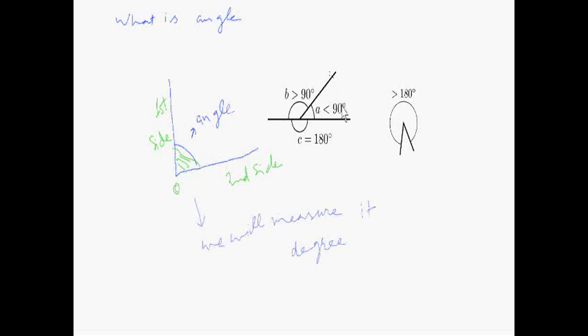There are lots of angles. This is less than 90 degrees. This is more than 90 degrees. And this straight line is 180 degrees. And this is more than 180 degrees. And the whole circle will be 360 degrees.